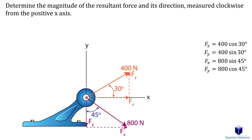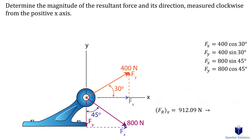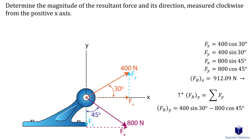We will start with the x-axis components, picking up and to the right as positive. Both x components of our two forces are pointing to the right, so they are both positive. Next, the y-axis components — one of our y components is facing up while the other is facing down, so the 800 newton force has a negative y component. After simplifying, we get a negative value, which just means that vector is pointing down.